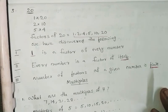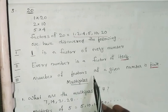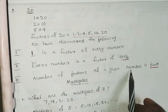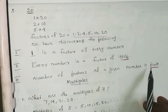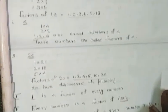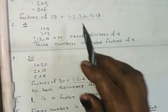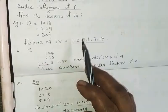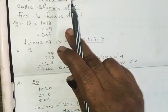The number of factors of a given number is finite. Finite means the number of factors is limited.